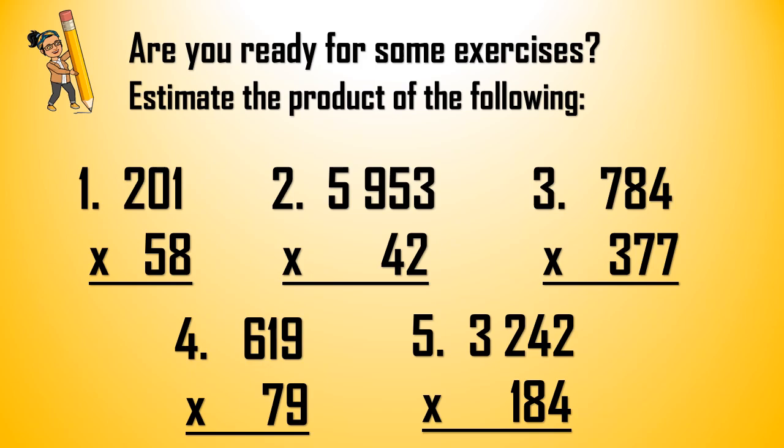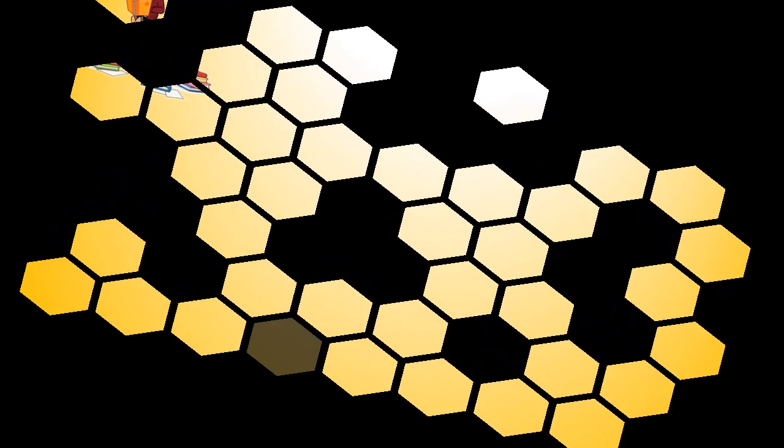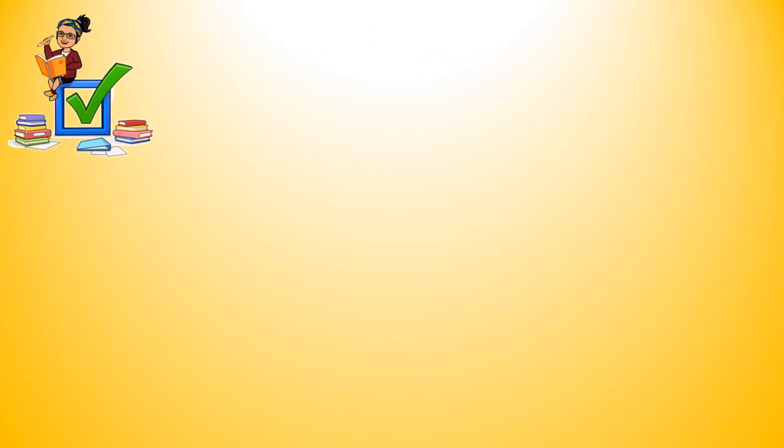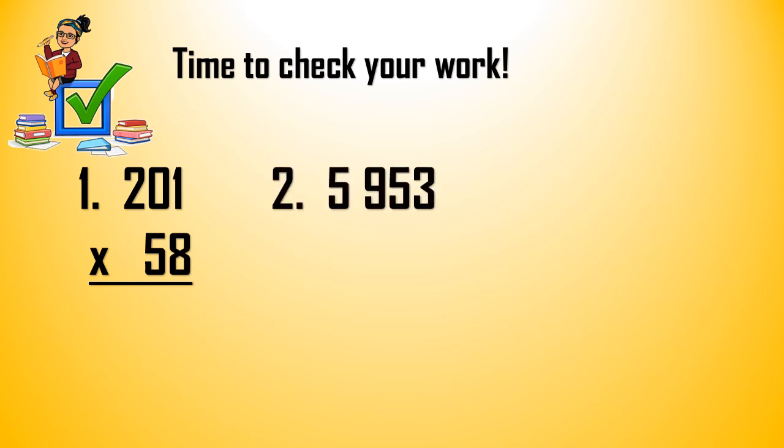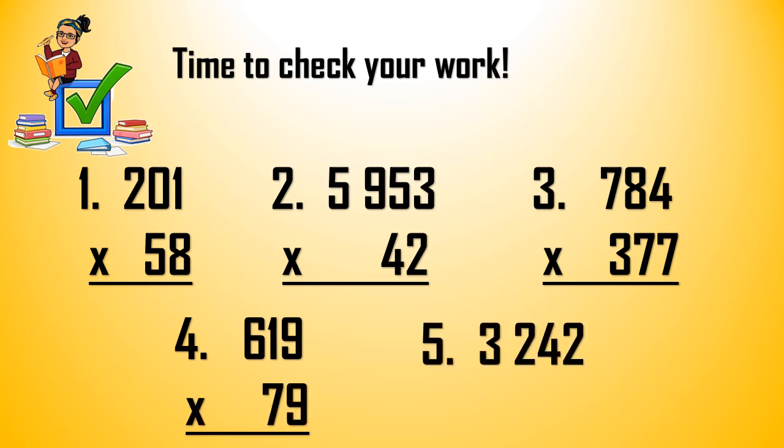Finished? Let's check. Time to check your work. Let's do 1 to 5 again. We have 201 times 58, 5,953 times 42, 784 times 377, 619 times 79, and 3,242 times 184.